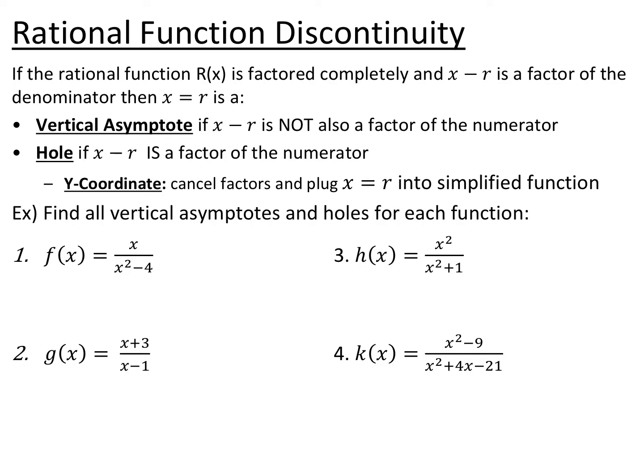Rational function discontinuity has two types. If a rational function is factored completely and x minus r is a factor of the denominator, then x equals r is either a vertical asymptote or a hole. It is a vertical asymptote if x minus r is not also a factor of the numerator, so it doesn't cancel. It's a hole if it is also a factor of the numerator. To find a hole's y-coordinate, cancel the common factors and plug that value into the simplified function. Anything that makes the denominator zero is either a vertical asymptote or a hole, but it cannot be both.